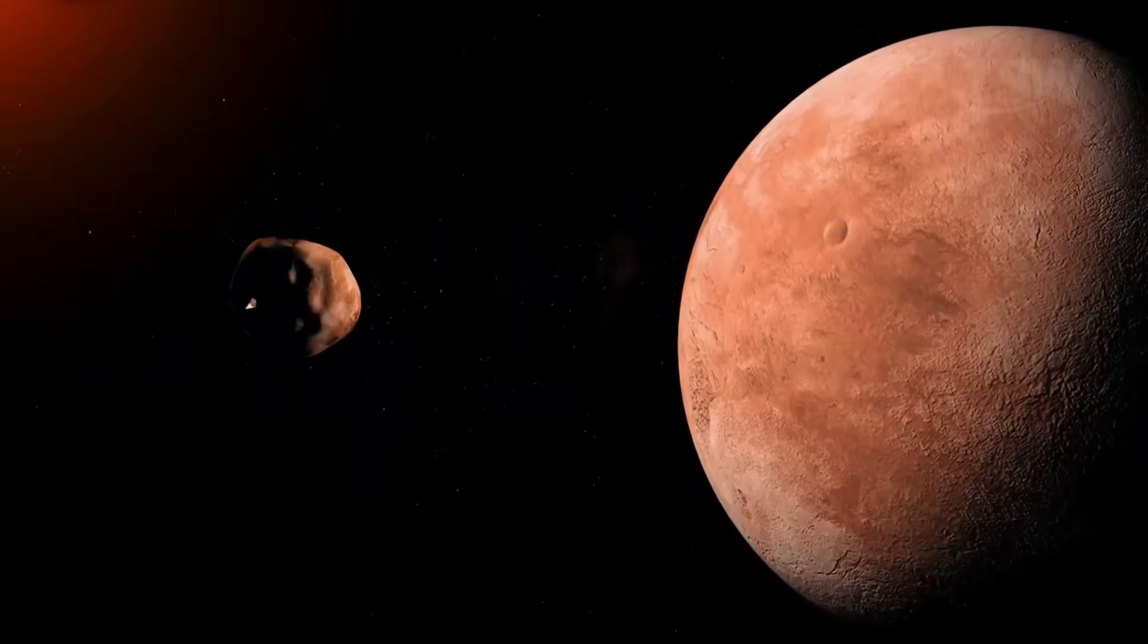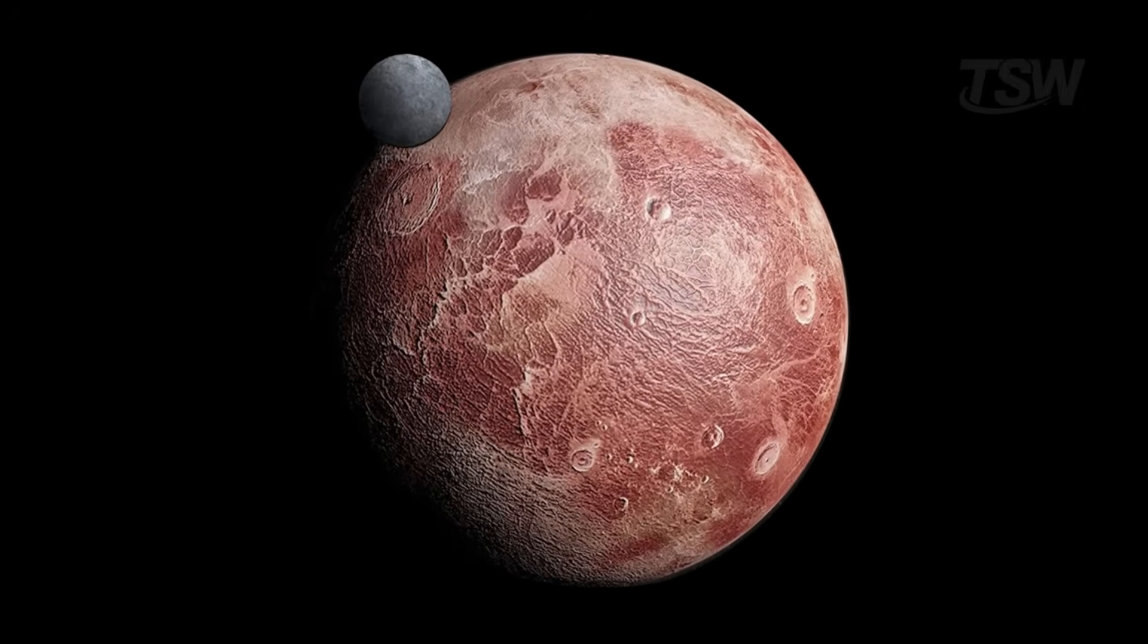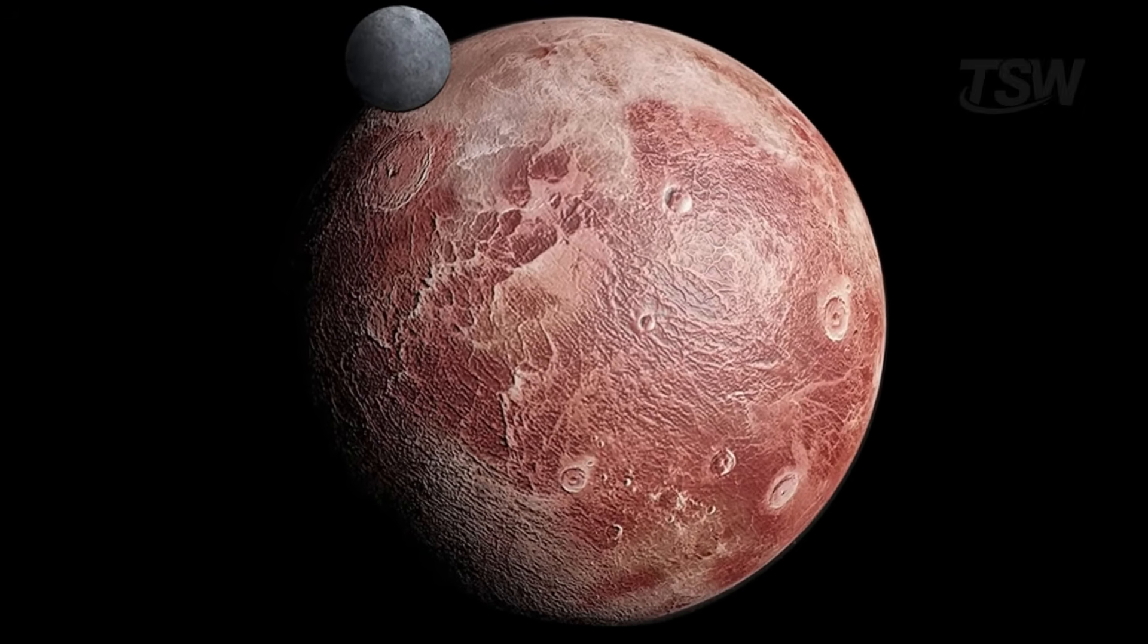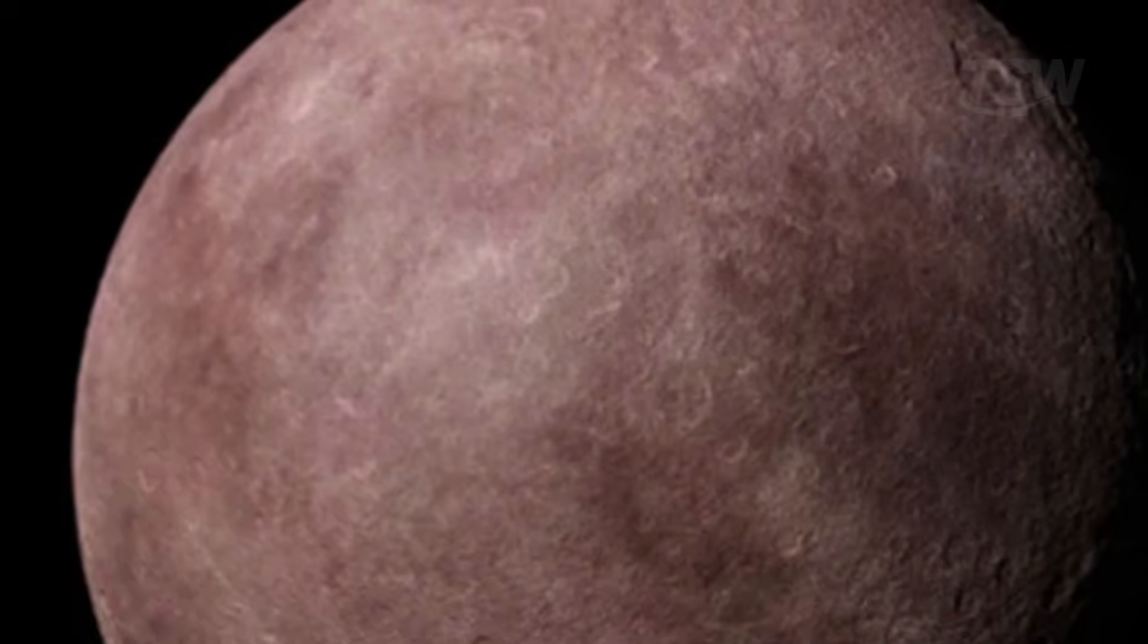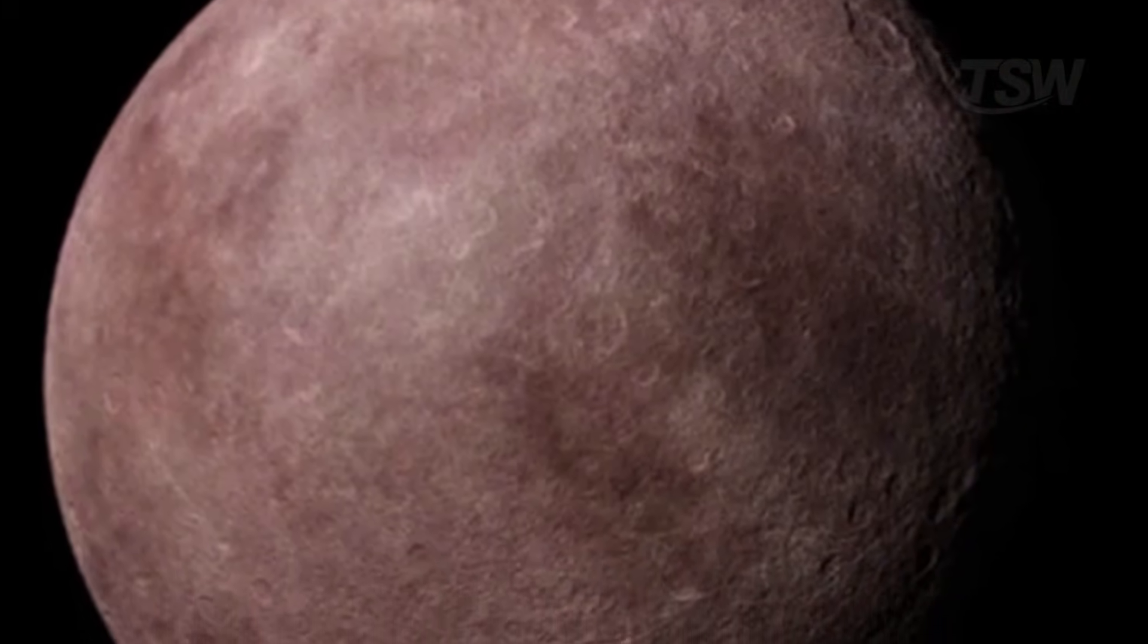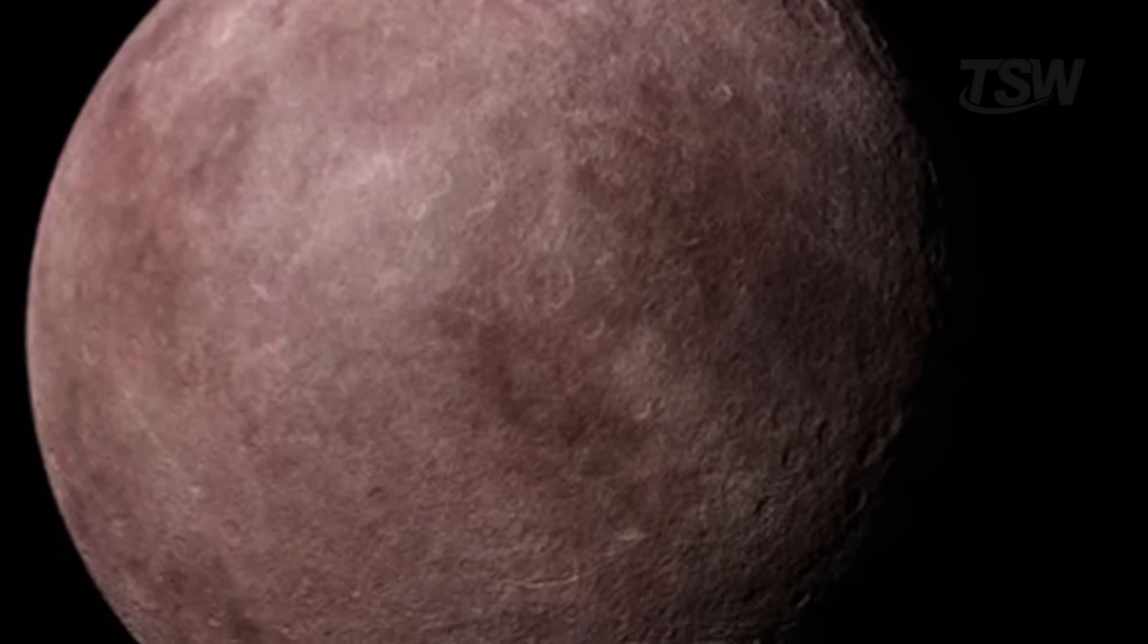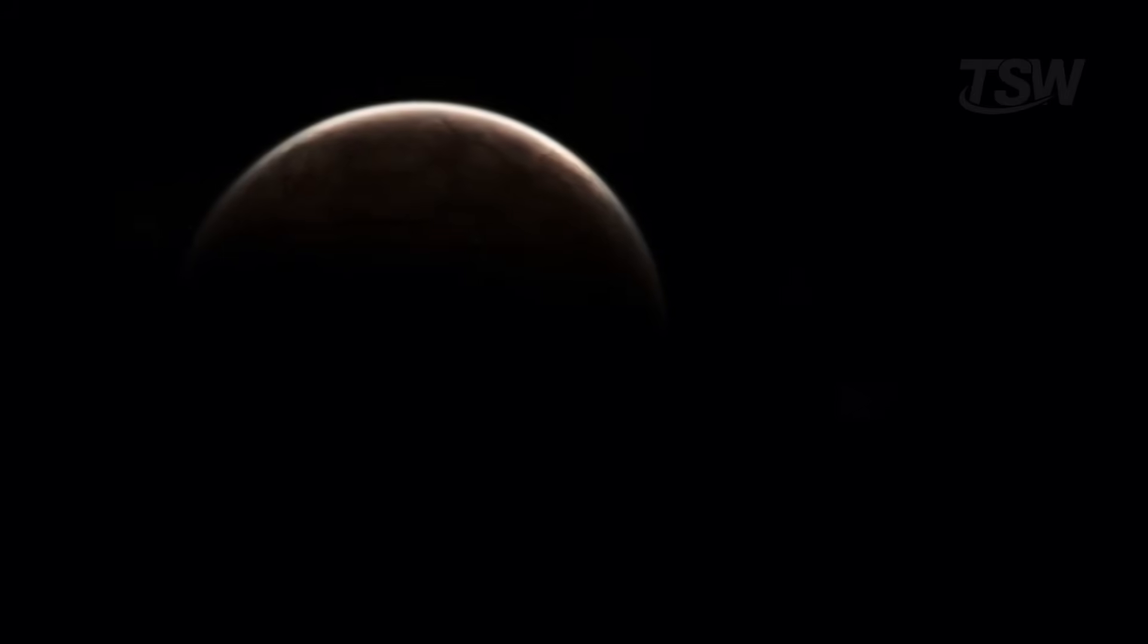Gong Gong's surface has an unusual reddish tint, a sign of tholins, complex organic compounds formed by the interaction of radiation with gases like methane. These compounds not only give the planet its color, but also point to chemical processes that help scientists understand how organic material forms in extreme environments.